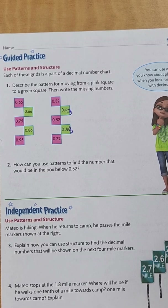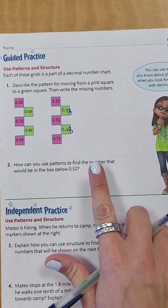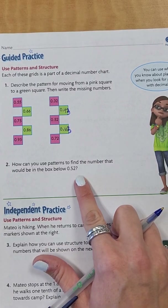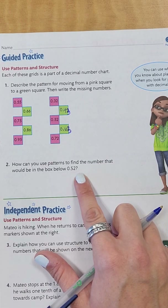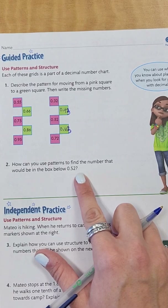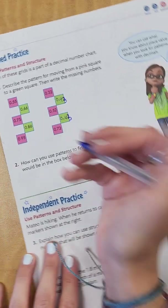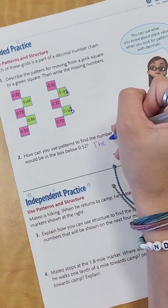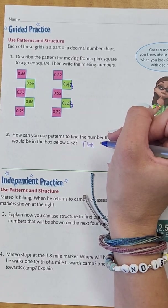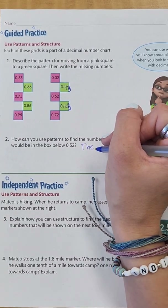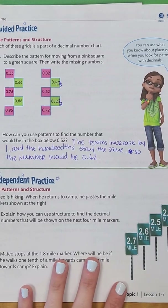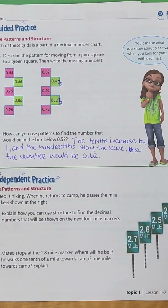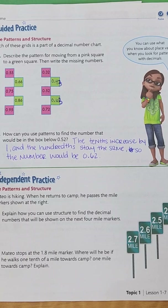So it says: how can you use patterns to find the number that would be in the box below fifty-two hundredths? Well, if the tenths is increasing by one and the hundredths stays the same, the number would be sixty-two hundredths. Let's write that down. Go ahead and pause the video and write that down so that you are caught up.